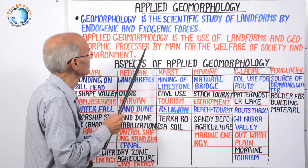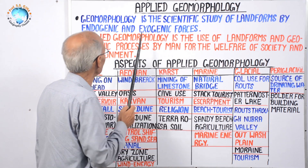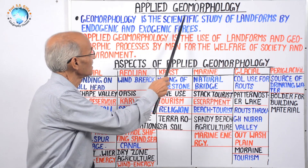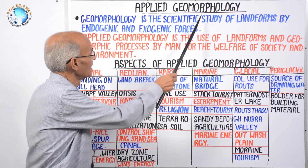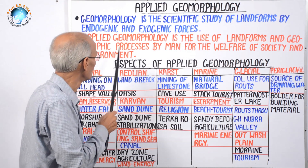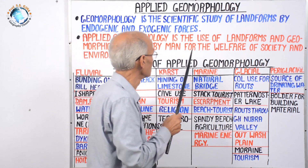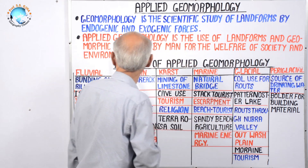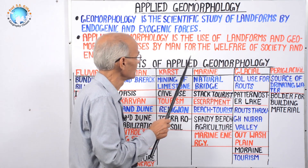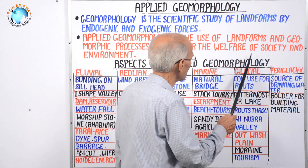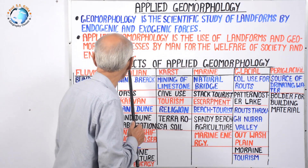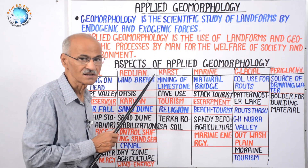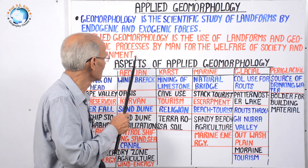Applied means its application — the application of knowledge of geomorphic landforms and processes. So applied geomorphology is the use of landforms and geomorphic processes by man for the welfare of society and environment, especially in this age of environmental conservation.